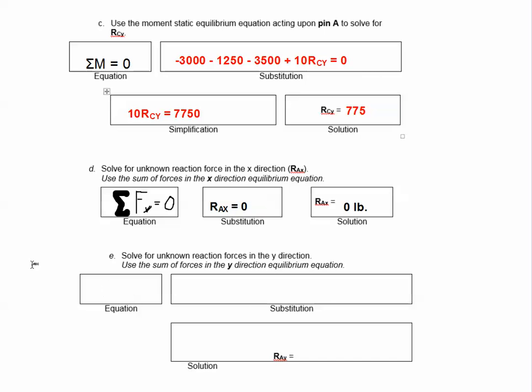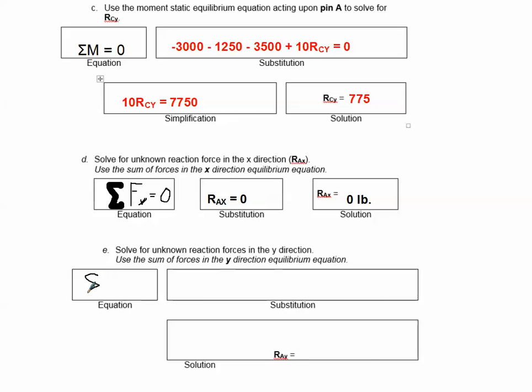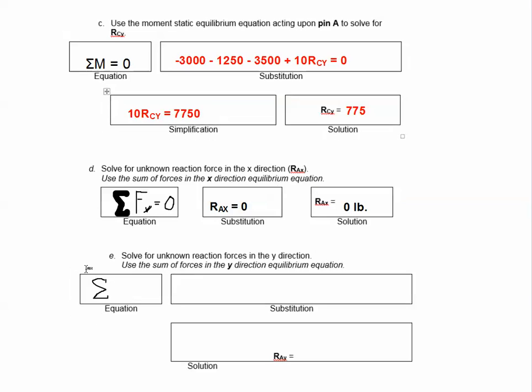Now if we go to the Y direction, same thing. Sigma F sub Y equals 0. The two forces in the Y direction at this point: we know RCY is 775, we have all those loads. Let me make a quick simplification. Negative 3000, negative 1250, negative 3500. That's negative 7750. But then we also have the value of RCY plus the value of RAY, and that equals 0.